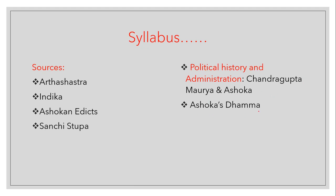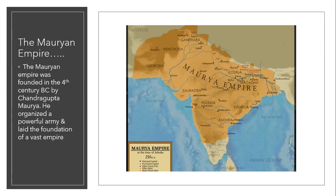Let's move on to the Mauryan Empire. You can see the map of the Indian subcontinent here — the border of the Himalayas, then Pakistan, and it goes further towards the west. This entire area shown in dark brown color is the Mauryan Empire.